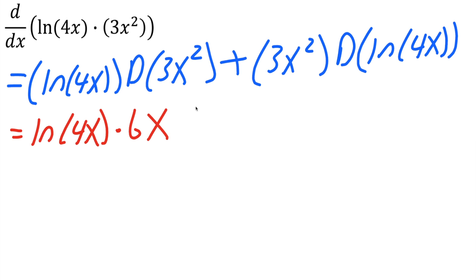So x¹ plus 3x² times the derivative of ln(4x), which involves the chain rule. The derivative of ln gives us 1 over the inside piece of 4x. Now we take the derivative of the inside piece, and the derivative of 4x is 4.